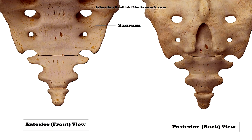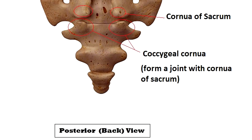Now let's take a look at some of the landmarks and structures on the coccyx bone. At the superior or top portion of the coccyx where Co1 is located, on the posterior or backside you'll notice two prominent tubercles that look like horns coming off the back angling upwards. These are called the coccygeal cornua and they articulate or form a joint with the cornua of the sacrum.